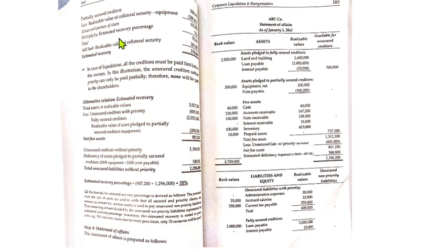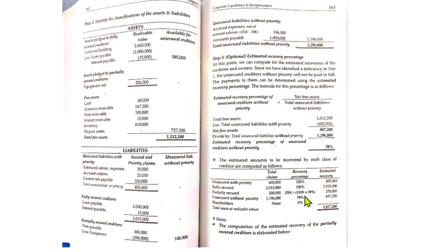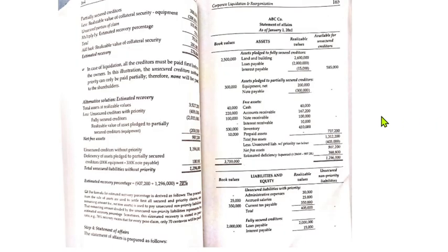A board exam may ask: how much is the share of the partially secured creditors on the total free assets? The answer is 270,000. The breakdown: 300,000 note payable minus 200,000 collateral equals 100,000 unsecured portion; 100,000 × 70% recovery equals 70,000; add back the 200,000 realizable value of the collateral security to get the estimated recovery of 270,000 for the partially secured creditors.